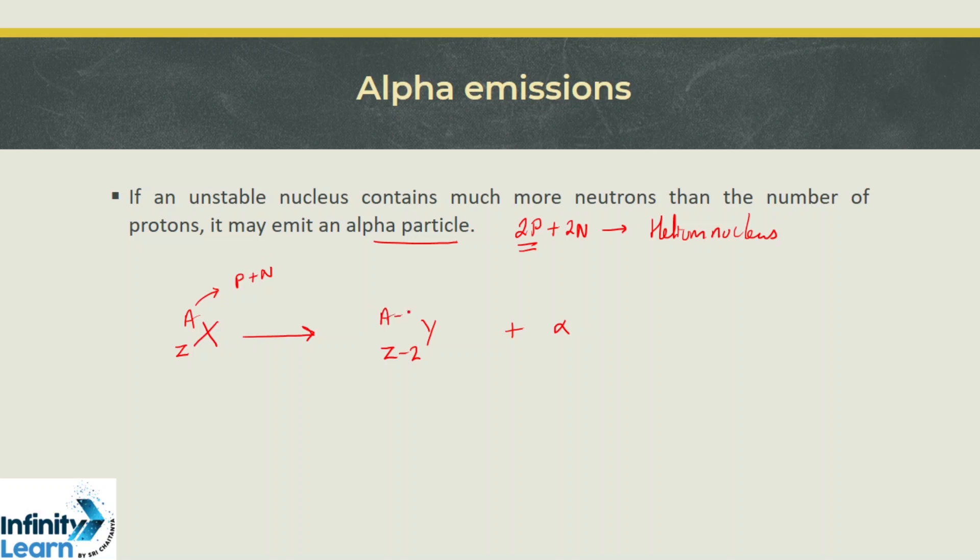The atomic mass number becomes A minus 4. X is called the parent nuclei and Y is called the daughter nuclei. The equation is balanced: Z on the left equals Z-2+2 on the right, and A equals A-4+4.